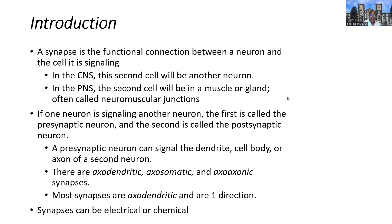If one neuron is signaling another neuron, we talked about the presynaptic neuron being that first neuron in series, and then the postsynaptic neuron would be the second neuron that is being signaled. Based upon that, we can have different types of neuronal synaptic connections. A presynaptic neuron can signal the dendrites, the cell body, or even the axon of a subsequent neuron.